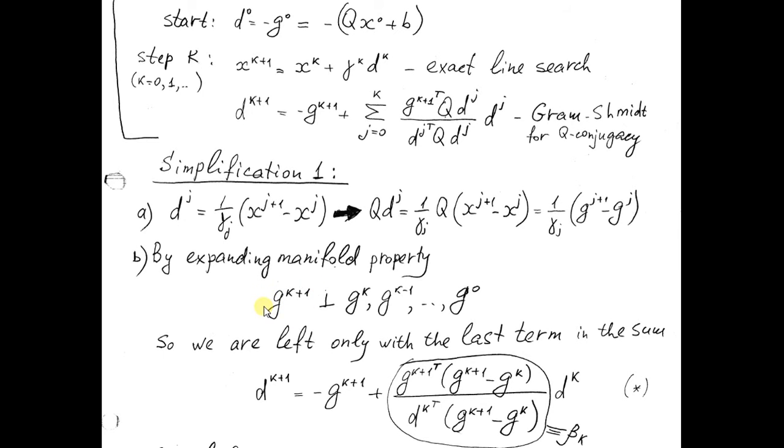On the other hand by expanding manifold property, new gradient is orthogonal to all previous directions. Q conjugate directions are built via Gram-Schmidt procedure on the base of all previous gradients, so they span the same subspace. In this way we conclude that new gradient is also orthogonal to all previous gradients. Taking into account that we have an expression of kind of new gradient multiplied by difference of previous gradients, we will get that all terms in this sum will cancel out, will be 0 except of the last one. And this will bring us first simplification.